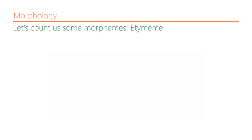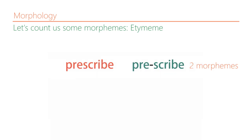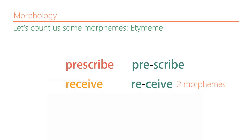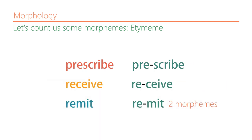Going back to the question of counting morphemes: 'prescribed' — yes, it's two morphemes. The second morpheme is an etymeme. So all of these words are two morphemes.